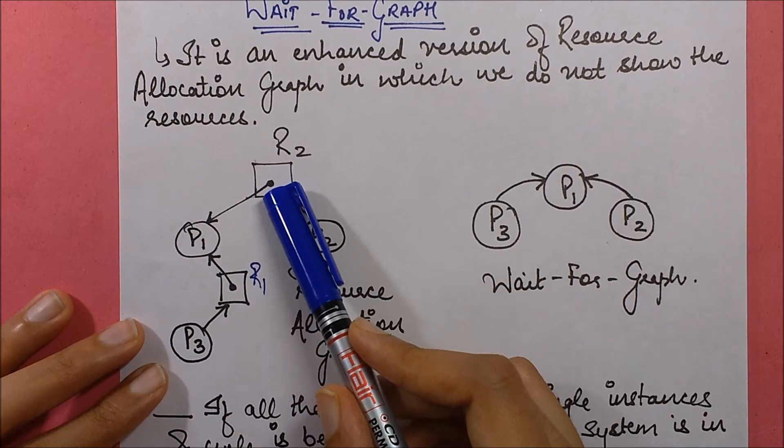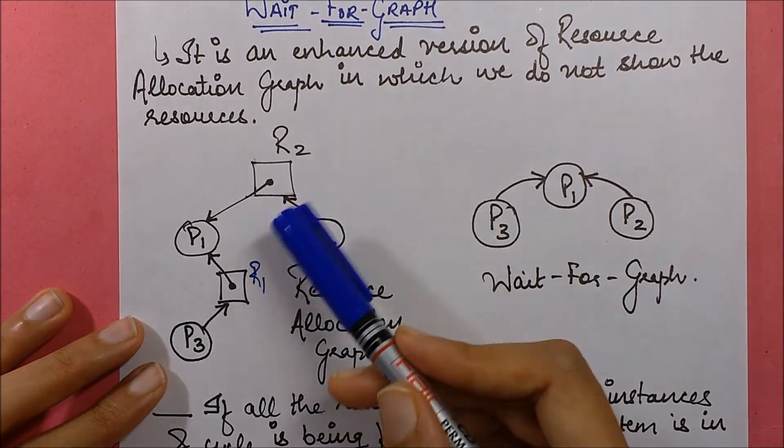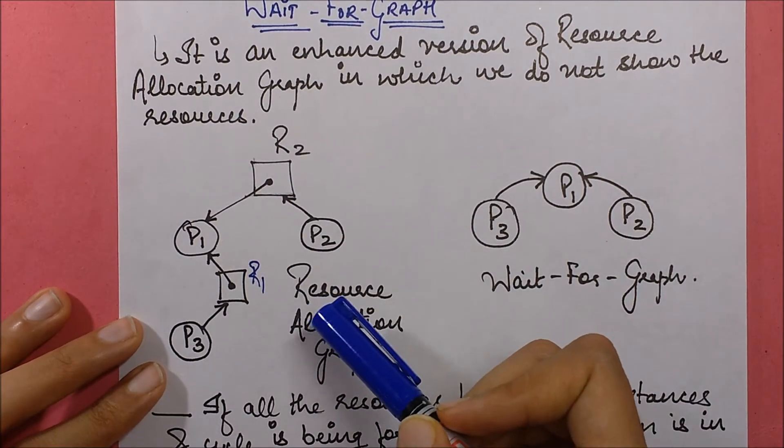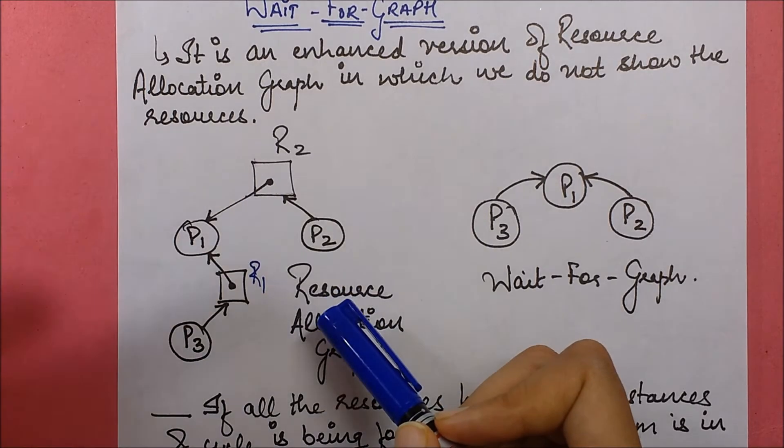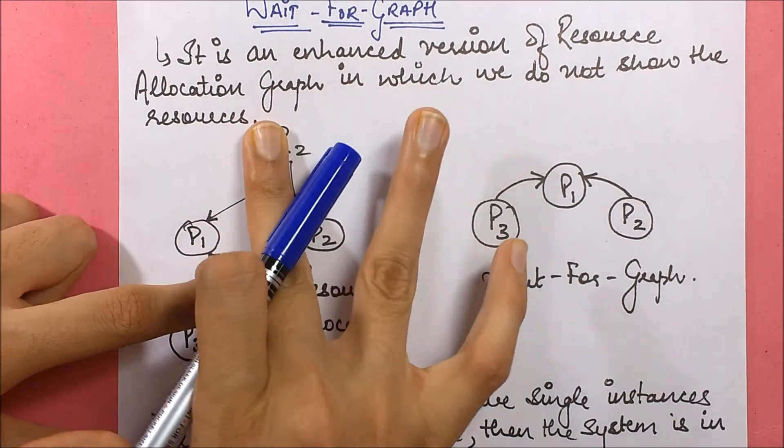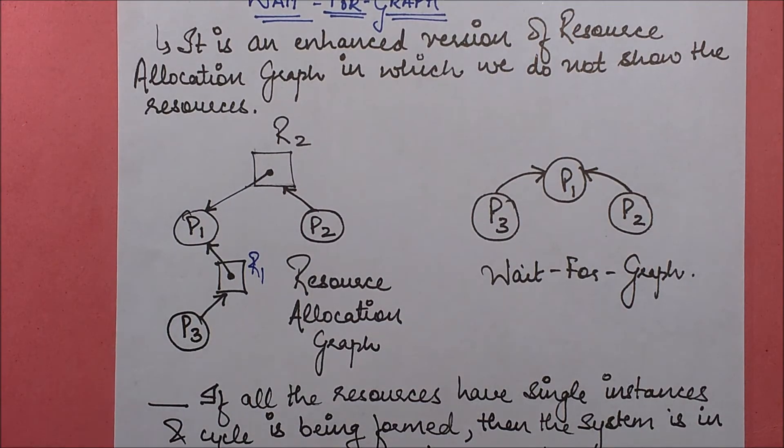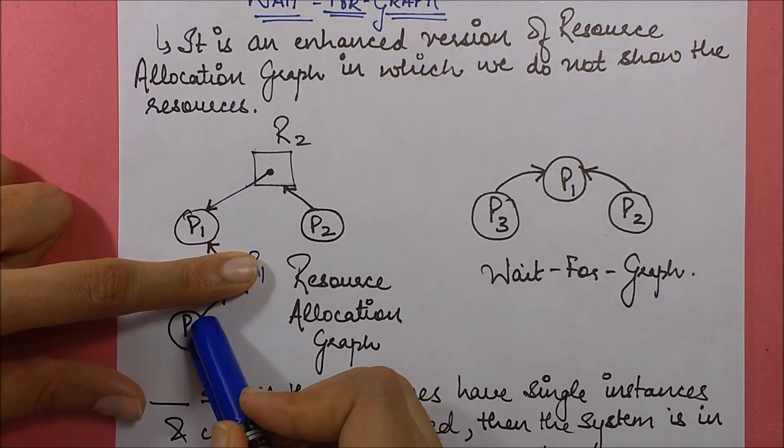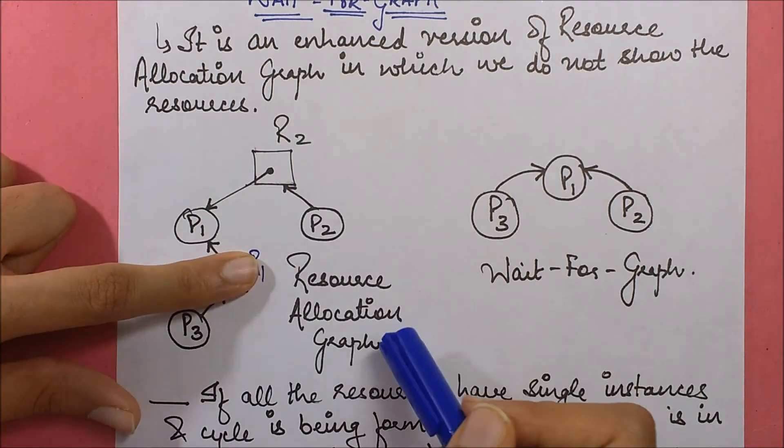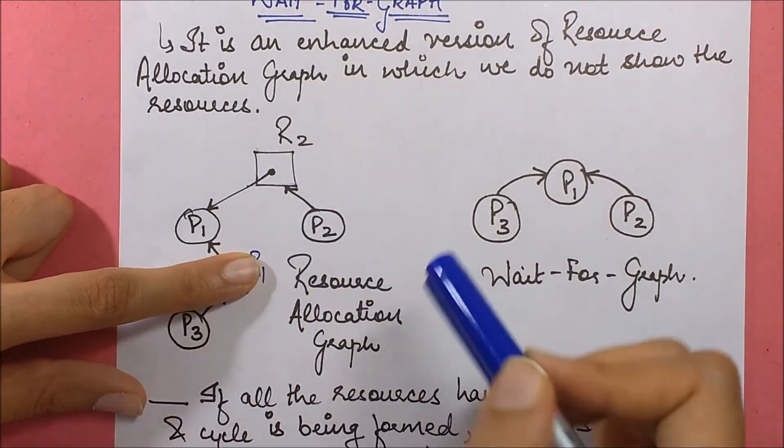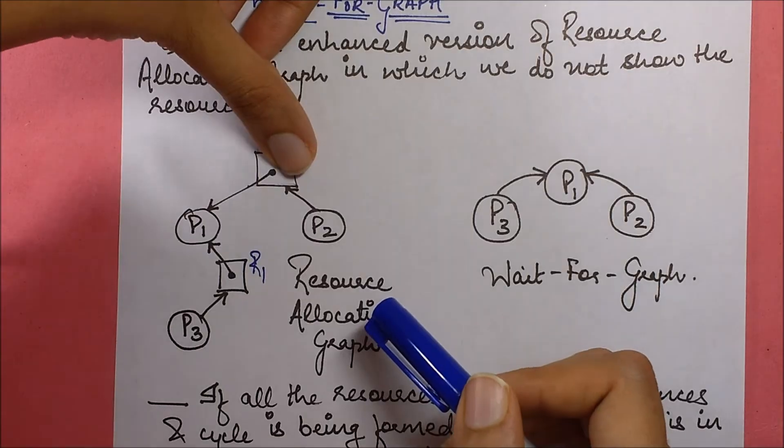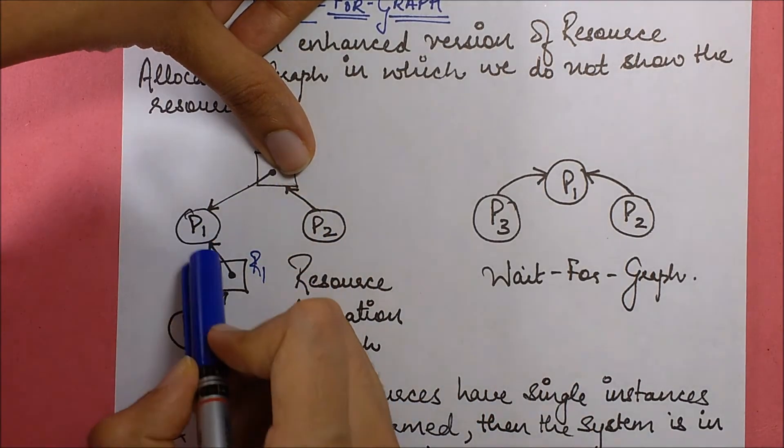Now, if I would have to relate it only with the processes, what would I do? I would just remove the resources from between and connect the arrows. If I remove R1, this arrow will connect to P1 in the same direction. If I remove R2, this arrow would connect to P1.